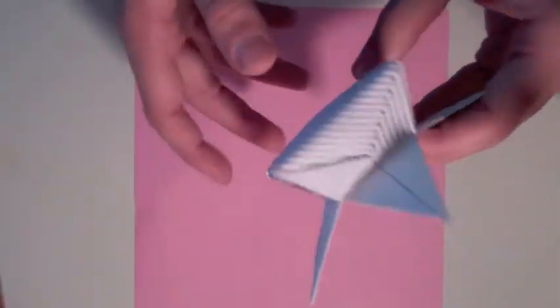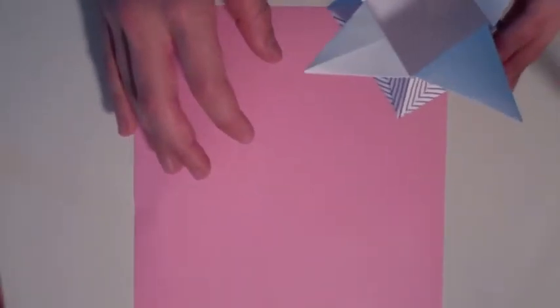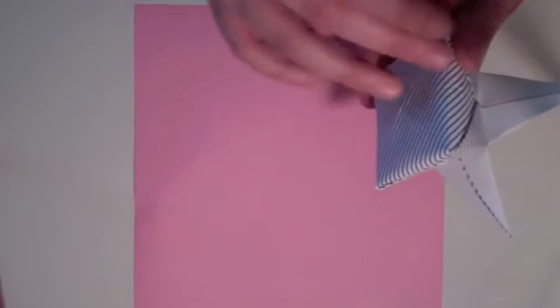Now if you want to have the color on the outside like this, you want to start with the white side facing up. But if you want the color on the inside and on the flaps, you want to start with the white side facing down. I'm going to make it with the color on the outside.